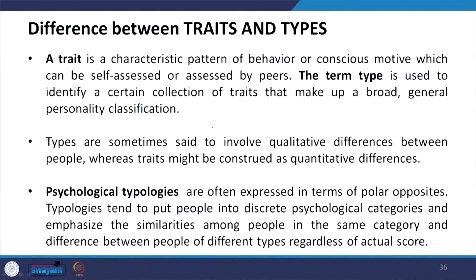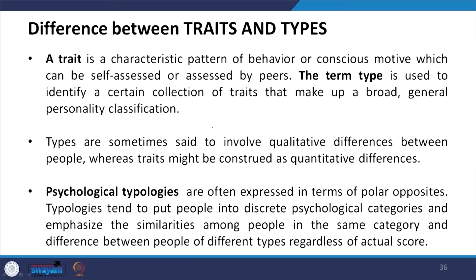As we discussed the Big Five model — openness, extraversion, agreeableness — these personality traits collectively form a type of personality. Psychological typologies are expressed in terms of polar opposites and tend to put people into different categories. The Big Five model classified personality traits, and on the basis of that classification, we create a particular typology that emphasizes the similarities among people in the same category.